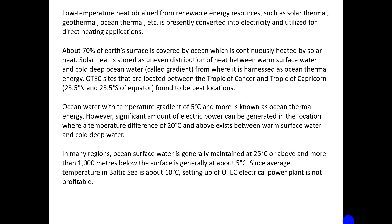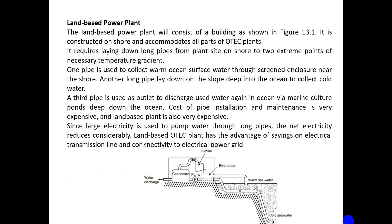OTEC sites are located between the Tropic of Cancer and the Tropic of Capricorn, around 23.5 degrees north and 23.5 degrees south of the equator — the best location for tapping ocean thermal energy. A temperature gradient of 5 degrees centigrade or more is required. Electricity generation is significant where the temperature is around 20 degrees centigrade at the top and cold below. In many regions, ocean temperature is maintained above 25 degrees centigrade, but in areas like the Baltic Sea, the average temperature is around 10 degrees, making a DC electric power plant not profitable.